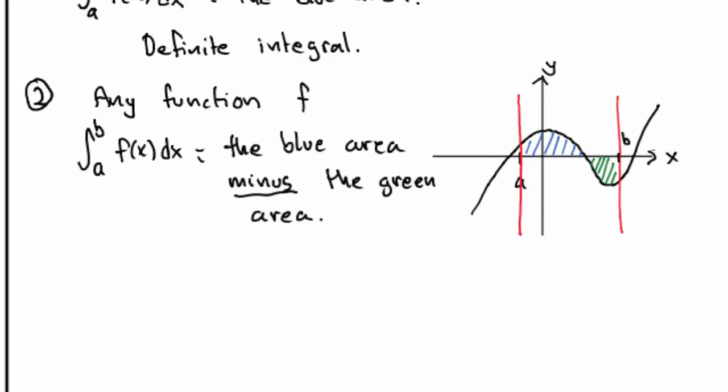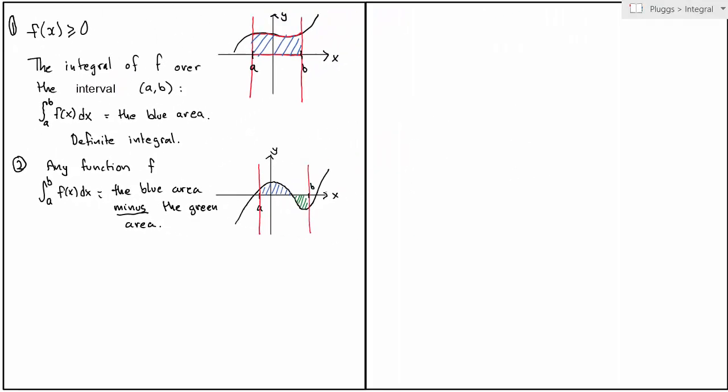is defined as the blue area minus the green area. And this is how we define the integral, or more specifically, the definite integral in general. It is the area between the graph of the function and the x-axis between a and b. Whenever the function is positive, we add to the area, and whenever the function is negative, we subtract from the area.